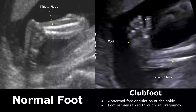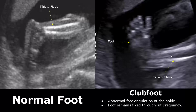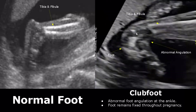Club foot refers to a condition in which there is abnormal angulation of the foot at the ankle relative to the tibia and fibula. Normally, the ankle and foot must look like this — the proper alignment. Whereas in this image, it appears curved at the ankle region and remains fixed in this position throughout the pregnancy.